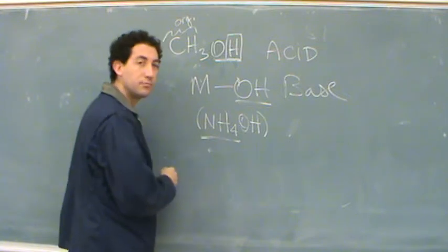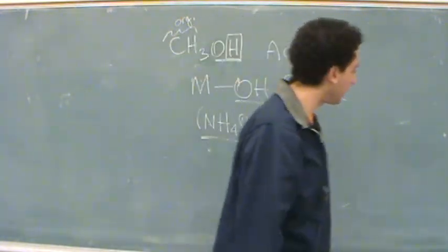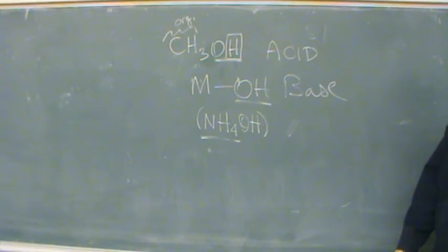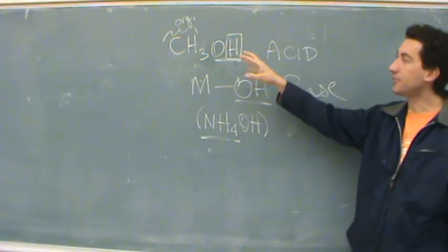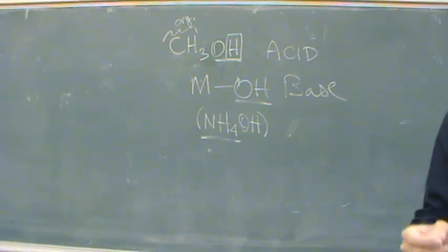This ammonium, it happens to be ionic. So that'll be a base. But otherwise, a base is going to have metal on it. And then acid, if there's organics connected to OH, it's acidic.